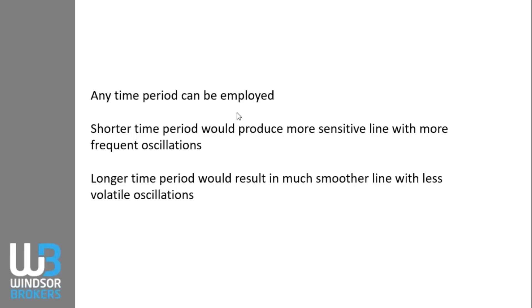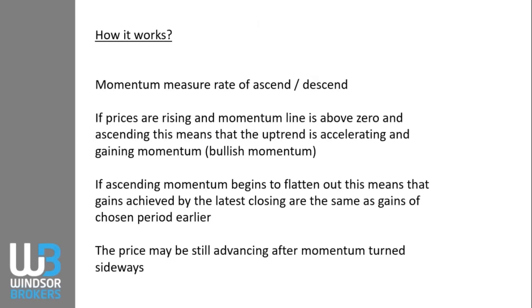Traders will use the indicator differently according to their trading style. Short-term traders will likely opt for a smaller period, giving more fluctuations and a clearer picture of near-term action. Longer-term traders would go for larger time frames and larger periods for the indicator, which helps maintain longer-term positions and see when that longer-term trend is likely going to run out of steam and eventually stall and reverse, giving the trader plenty of time to act accordingly and cover their position.